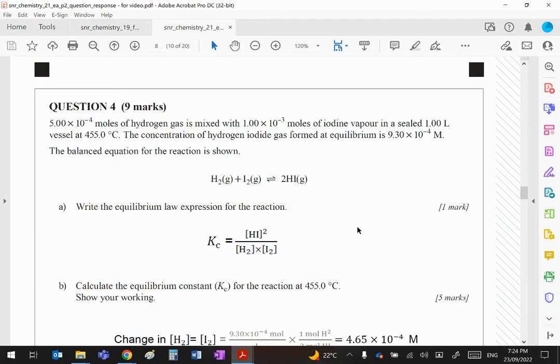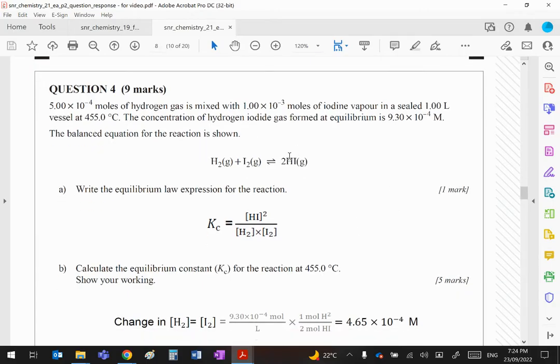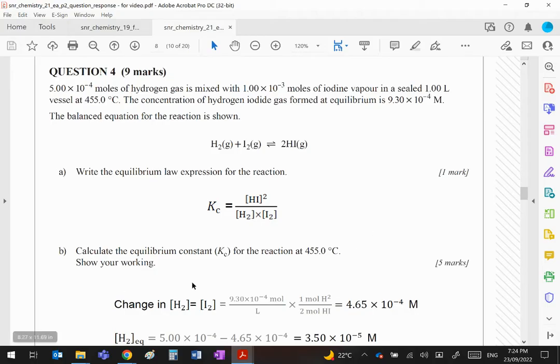They ask you for the equilibrium expression, which of course is products over reactants. Remember the 2 there means the HI concentration is squared. The other two obviously are as they are.